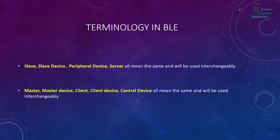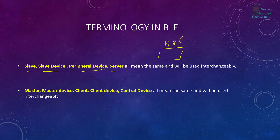Remember one thing: whenever I say slave, slave device, peripheral device, or server, they all mean that it's going to be our device that we are programming right now, which is the nRF52832 or the nRF52840. So it will be the device that we are programming, and this device is basically the peripheral device or the slave device. Sometimes I would say server, sometimes slave, sometimes peripheral device — they all mean the same.